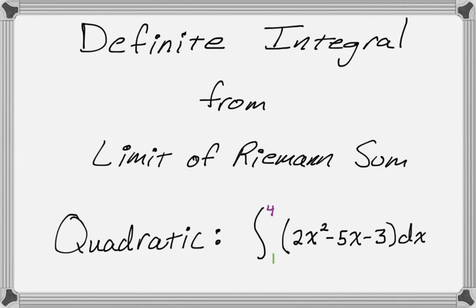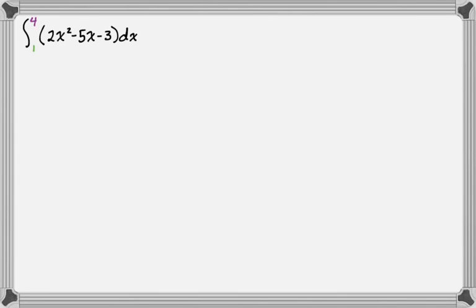In this video we are going to find a definite integral by taking the limit of the Riemann sum. It's a good skill to develop. Specifically, we're going to deal with a quadratic as our integrand, and it's the integral from one to four of 2x² - 5x - 3 dx. Let's get started.